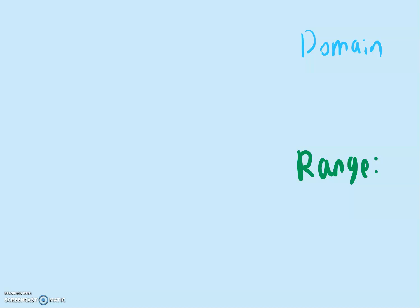In this video you will learn how to find the domain and range of a cubic function or a cube root function. The domain is talking about the x direction, so you will be starting from the left side and go to the right side. The range is talking about the y direction, so you will start from the bottom and go to the top.